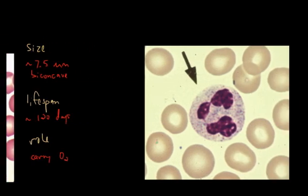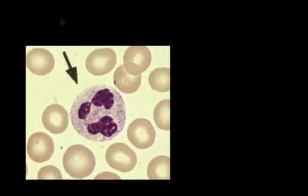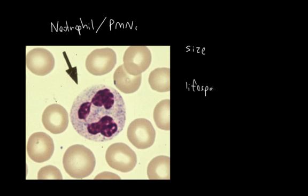The next cell we're going to look at is the neutrophil. And this here is a picture of one, so we'll go and label this picture neutrophil. And neutrophils are also known as PMNs. Like we did with the RBC, we're going to be talking about the size, lifespan, and role of this type of cell.